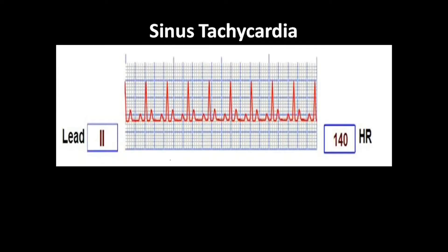In sinus tachycardia, when you look at the ECG, there is a P wave, upright QRS complex, and a T wave. All the waves will be upright in lead 2, and the heart rate will be more than 100 beats per minute — for example, 140 beats per minute. The RR interval appears in a shorter duration, and there will not be any missing waves; all waves are clearly visible.